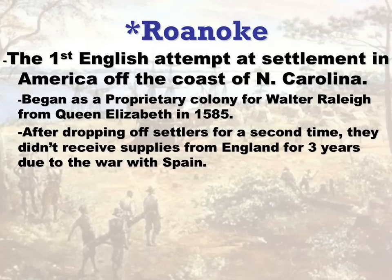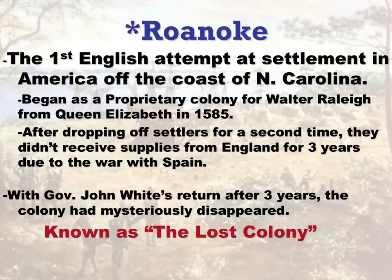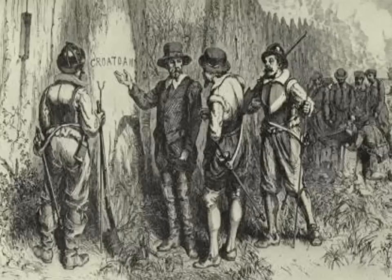White ended up leaving his family to go back to England and get supplies. During that time, Queen Elizabeth had declared war on the Spanish, and she needed every boat in her fleet to take on the Spanish Armada. They were successful in defeating them, but that took about three years. With that war, Governor White was gone. When he returned, the colony had vanished and mysteriously disappeared. It is known today as the Lost Colony of Roanoke. All that's left is a sign on a tree spelled 'Croatoan' — the name of an Indian tribe about 50 miles inland. No one knows what happened to them. It is still the unsolved mystery of 400 years.